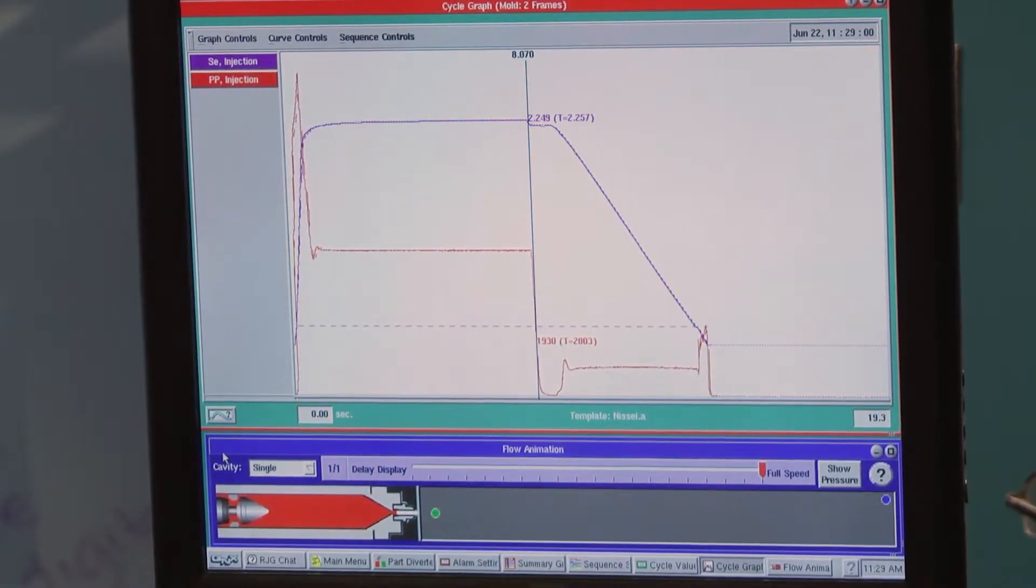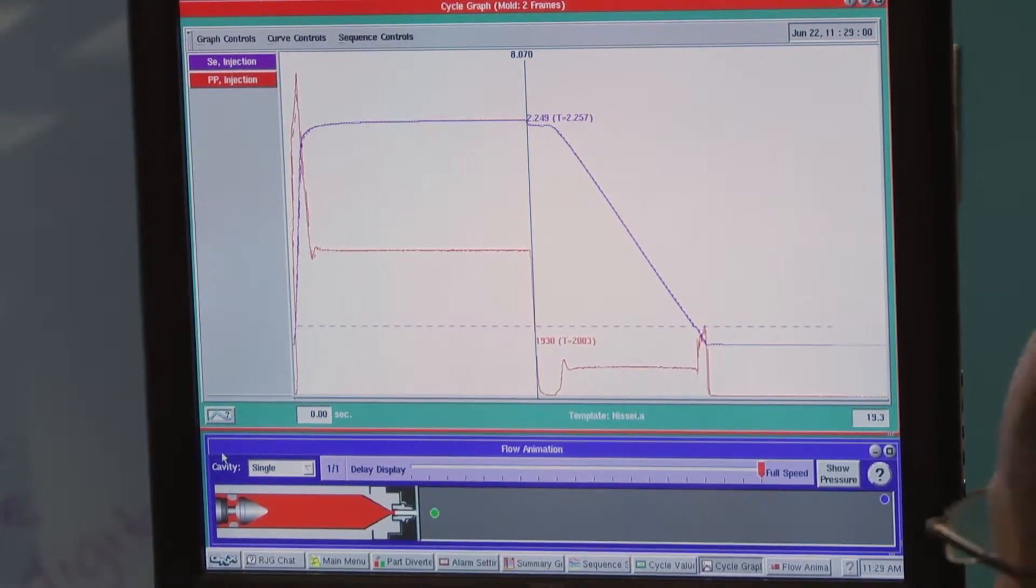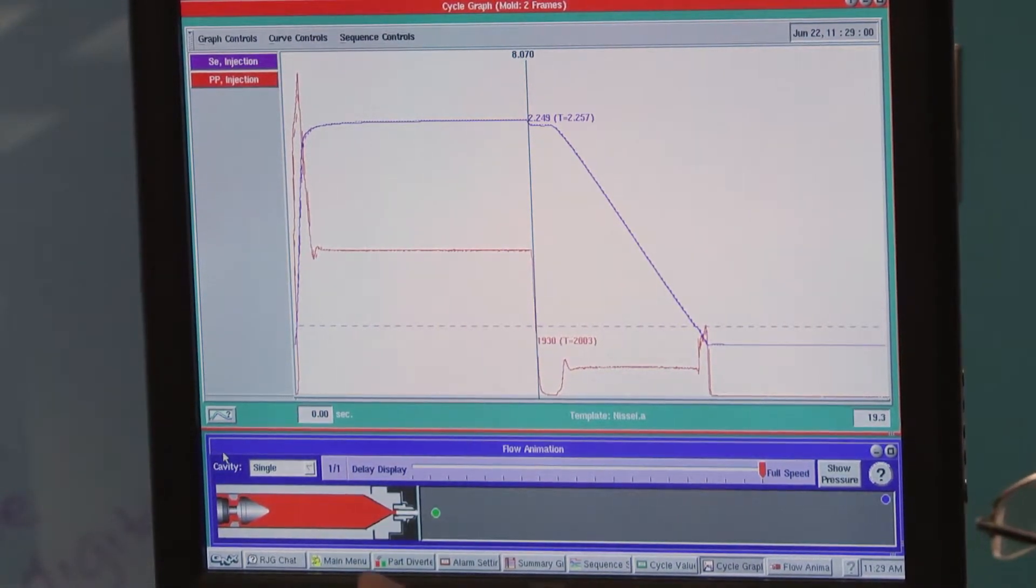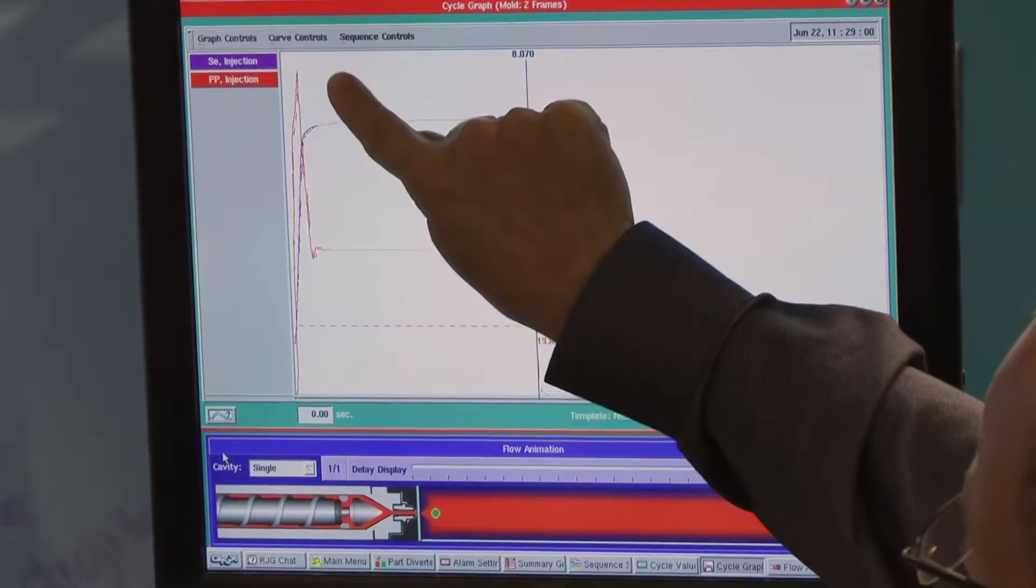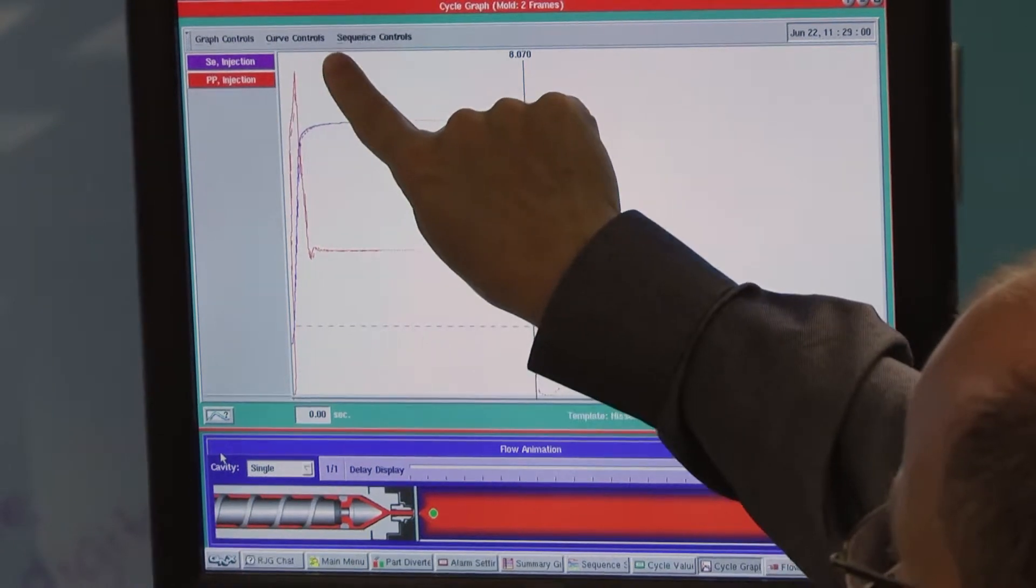Let's wait till the start of the next cycle where we'll be watching as the screw comes forward. We can see the filling stage of the curve, the fast pressurization.